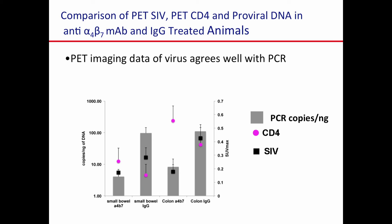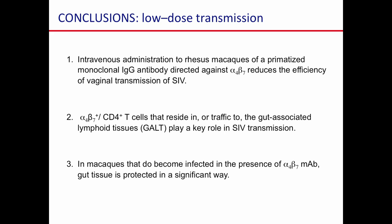We wanted to validate all this by doing PCR for virus — looking at virus by both PCR and imaging. There's a pretty good correlation: on the Y-axis is copies of DNA by PCR, and here is the SUV max by imaging. When the virus is low by imaging, it also tends to be low by PCR. There's also a nice inverse correlation with CD4. So we think this tends to validate the assay and we're on the right track.